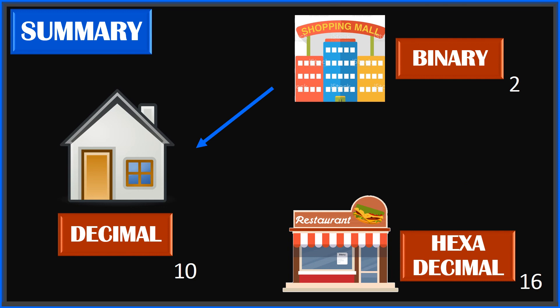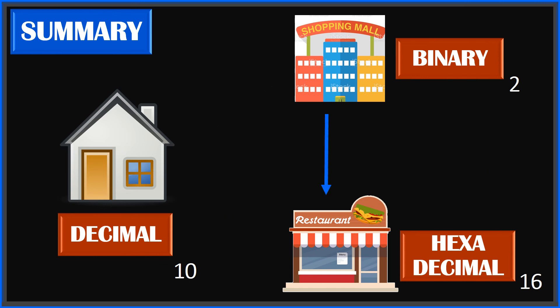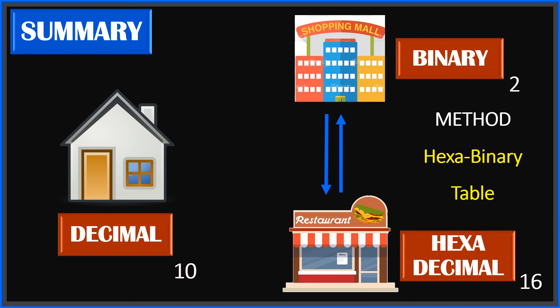Similarly, if you go from shopping or restaurant back to home — that is, from binary or hexa back to decimal — you use repeated multiplication: multiply by 2 for binary, multiply by 16 for hexa. The third case is going directly from shopping mall to restaurant, binary to hexa or hexa to binary, with no house involved. For that direct conversion, you will use the hexa-binary table.